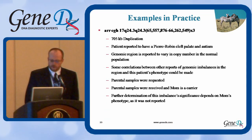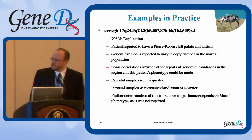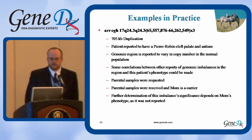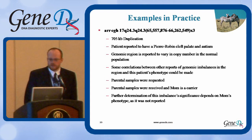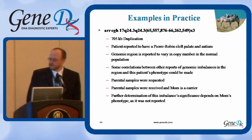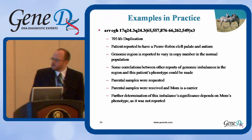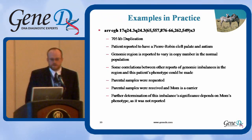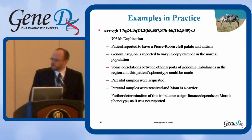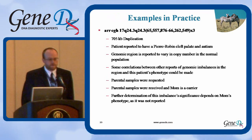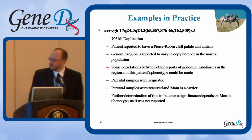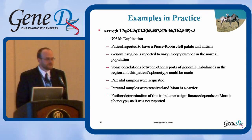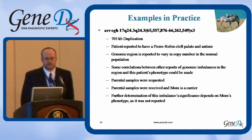For our array CGH duplication, this was a 705 KB duplication. The patient was reported to have Pierre-Robin cleft palate and autism. The genomic region is reported to vary in copy number in the normal population. Some correlations could be made between other reports of genomic imbalances in the region and the patient's phenotype; however, usually they were deletions, not duplications. Parental samples were requested, received, and we determined that mom was a carrier. So we could assume it's benign; however, that really had to be left to the clinician's discretion since clinical information was not provided on the mother.